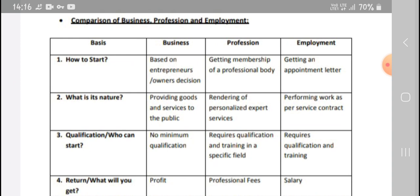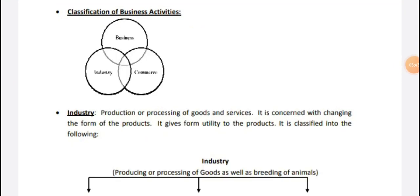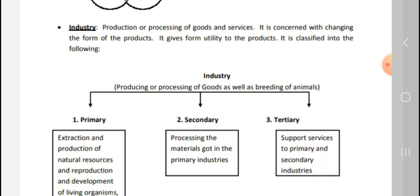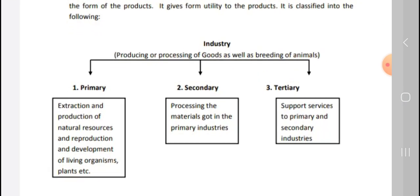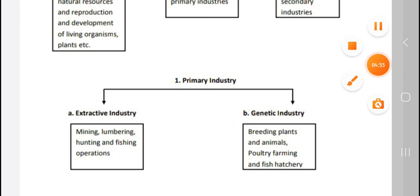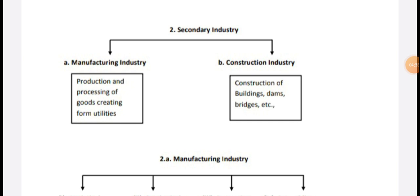Next, classification of business activity. Business is classified into industry and commerce. Industry is concerned with the production or processing of goods and services, and involves changing the form of products. Industry is classified into primary and secondary industry. Primary industry involves extraction and production of natural resources. Secondary industry involves processing materials from the primary industry. Tertiary industry provides services to primary and secondary industries.